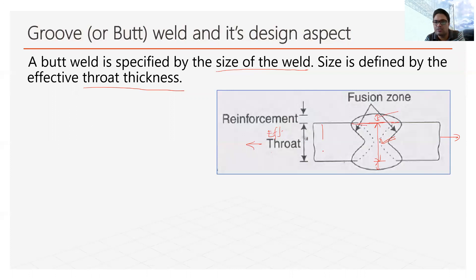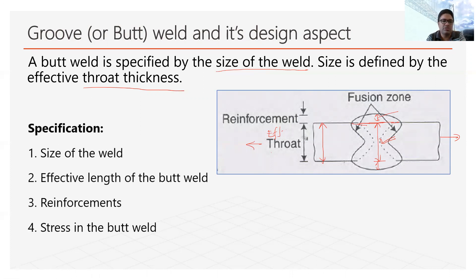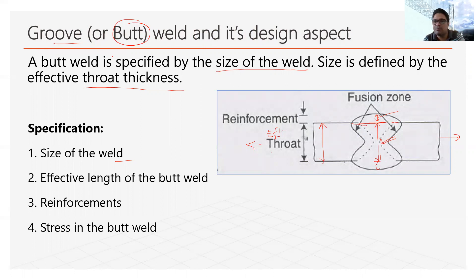The effective throat thickness is also the size of the weld, so in this case size of the weld and effective throat thickness are both the same. These are some of the points we have to consider while designing the butt weld — sometimes called groove weld design — in which we make grooves that are filled by the weld material.